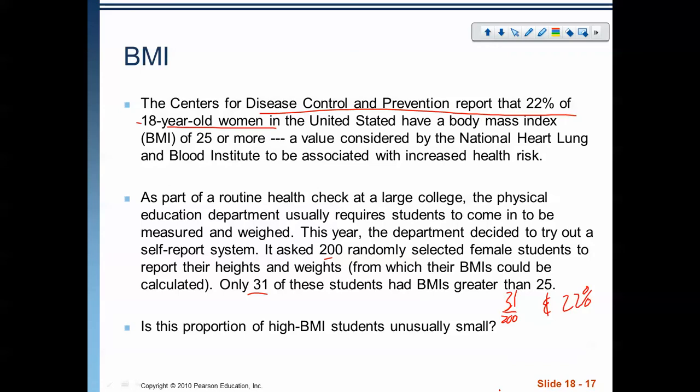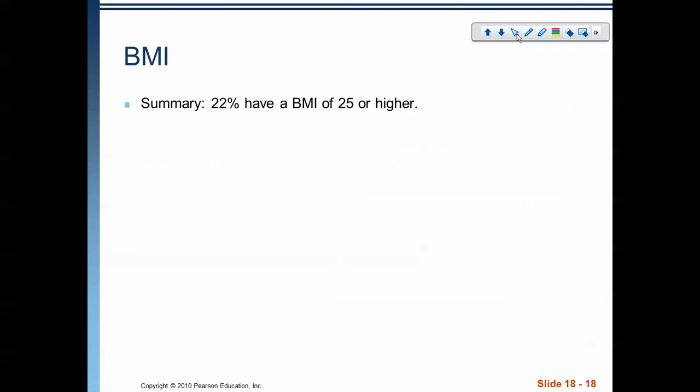What we want to do is kind of find that probability. Make a sampling distribution and say, if I had a sample of 200 people, what's the probability that I get this proportion? So, there's a summary of the information. 22% is what it's supposed to be. When they did their sample, it was 31 out of 200. So, let's see if we can use a normal model to approximate this. We'll check our conditions.